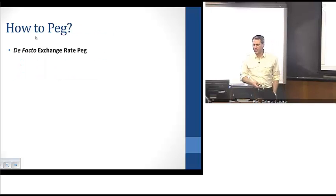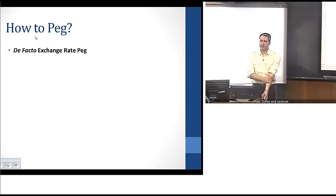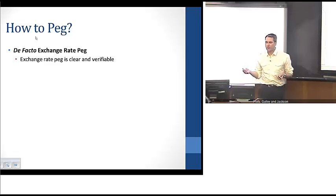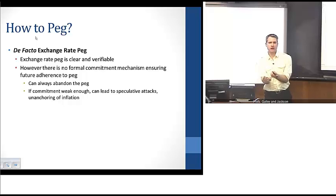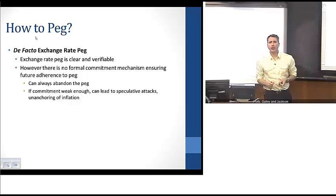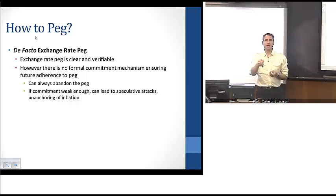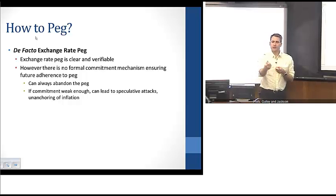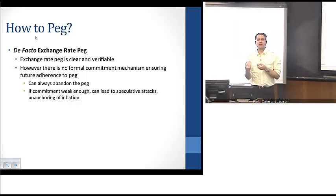The final question is about the mechanics: how can we actually do that? There's what we refer to as a de facto exchange rate peg — sometimes referred to as a standard exchange rate peg. The basic idea is that the exchange rate peg is defined, clear, and verifiable. But the important part is that there's no formal commitment mechanism. The central bank or government can declare this is their peg, but nothing binds them to it and they can abandon it at any time. If commitment is weak enough, that opens up the possibility of speculative attacks.